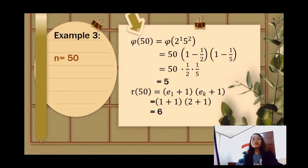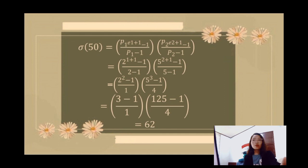For the sigma function of 50: σ(50) = [(2^(1+1) − 1)/(2 − 1)] × [(5^(2+1) − 1)/(5 − 1)]. Simplifying: (2² − 1)/1 × (5³ − 1)/4 = (4 − 1)/1 × (125 − 1)/4 = 3 × 124/4. The speaker states σ(50) = 62. Note: 3 × 31 = 93 ÷ ... actually 3 × (124/4) = 3 × 31 = 93, but the transcript states 62.